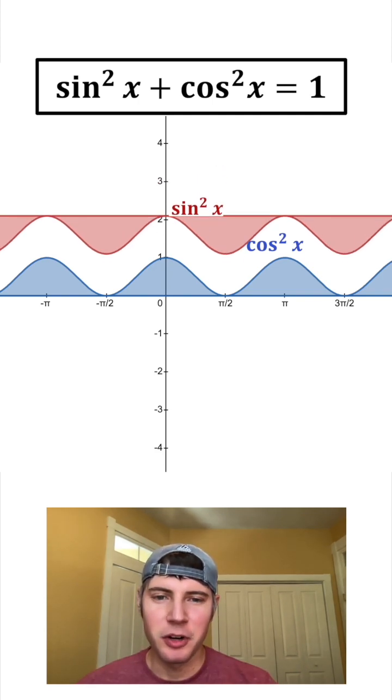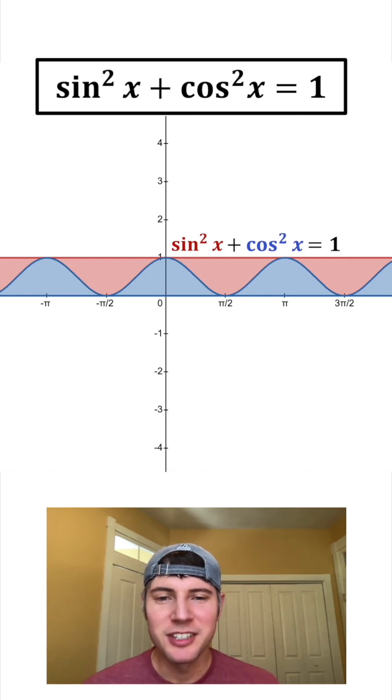And now let's bring down our sine squared of x, and you see they fit together perfectly. And that gives us sine squared plus cosine squared is equal to 1. How exciting.